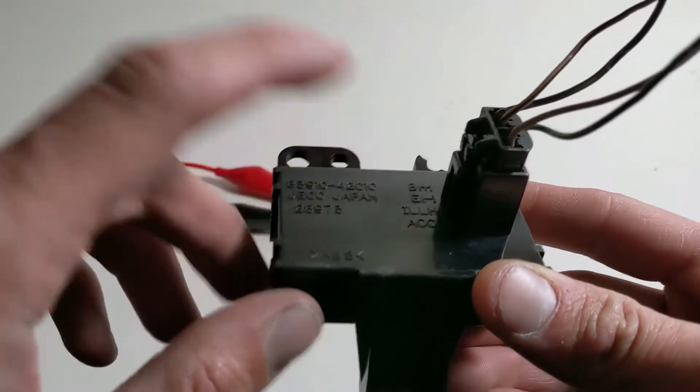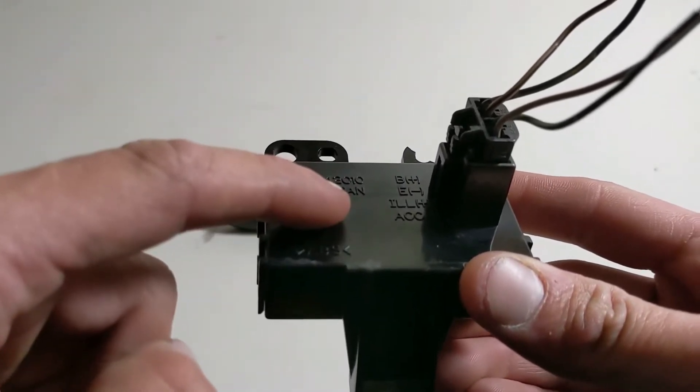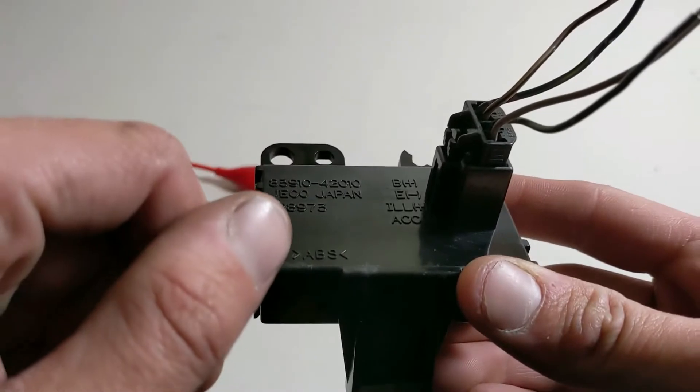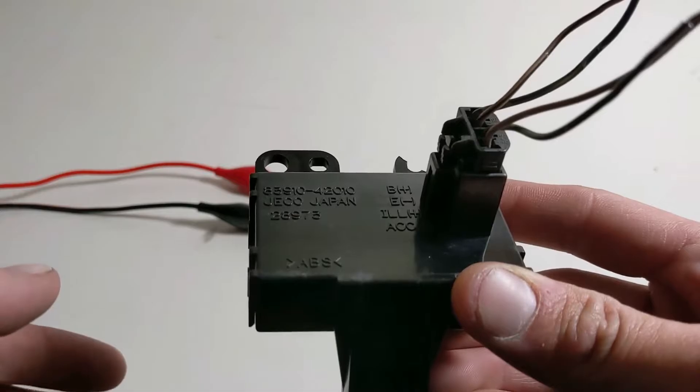Then here we have ACC. And I think what this signal does, it's also a 12 volt signal, but this just makes it so the clock isn't on if your car is not in the ACC or the on position. So that way the clock's not on all night, draining your car battery.